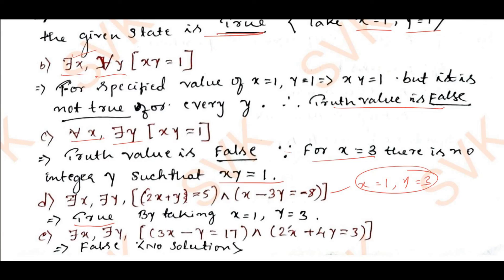Fifth: there exist x, there exist y such that 3x − y = 17 and 2x + 4y = 3. If we solve these two equations, we do not get a valid integer solution. Therefore no solution exists among non-zero integers, and the given statement is false.